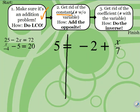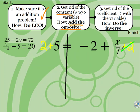Step 2 says get rid of the constant. In this equation, the constant is the one not attached to the variable, so our constant is negative 2. To get rid of the constant, we add the opposite. The opposite of negative 2 is positive 2. Whatever you do to one side, you do to the other — you've got to keep it balanced. Positive 2 and negative 2 cancel out, which is exactly what we want. On one side we have 2 plus 5, which is 7, and we have x over 7 left on the other side. The next step is to get rid of the coefficient, which is 7 — it's attached to the variable.